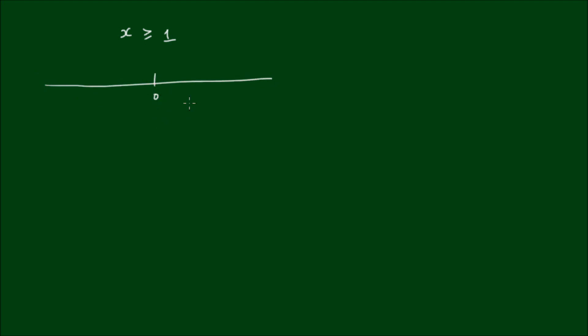In the real number system, I can show the relationship that x is greater than or equal to 1 on the number line. If I draw a number line with 0 in the middle and the number 1 to the right, continuing to positive and negative infinity, then the condition x ≥ 1 is shown by drawing a filled circle around 1 and an arrow representing that x can take any value above 1 on the number line.